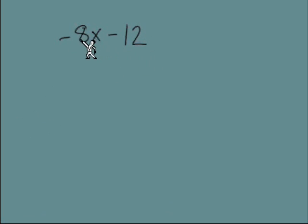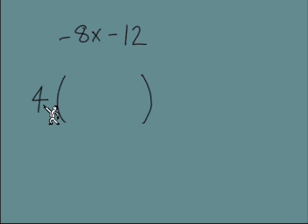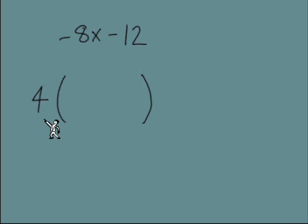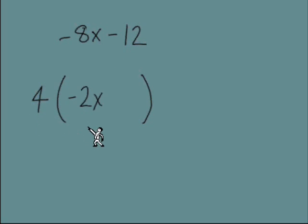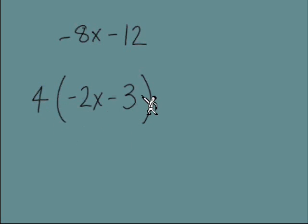But we could divide negative 8 and negative 12 both by 4, so we can have a 4 for the GCF in front of parentheses. Inside the parentheses we'll need a negative 2x and a negative 3.